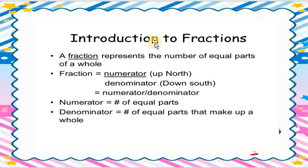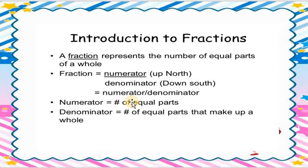A fraction has an upper number called the numerator and a lower number called the denominator. The upside digit is called the numerator and the downside digit is called the denominator. A fraction is equal to numerator upon denominator. These are the mathematical terms: numerator and denominator.